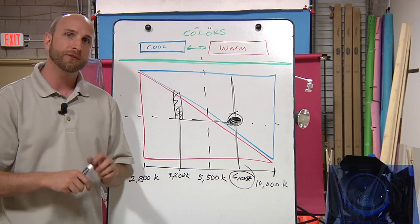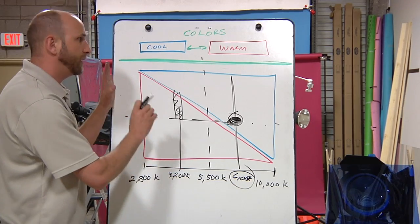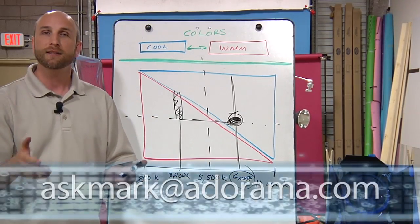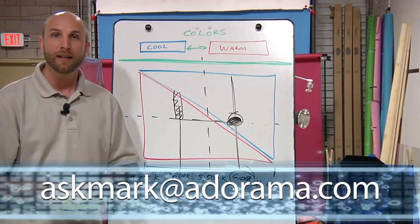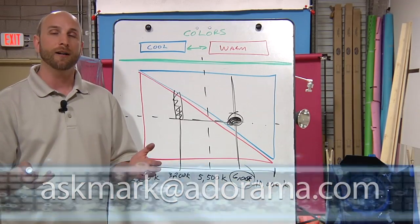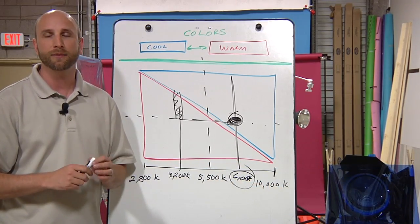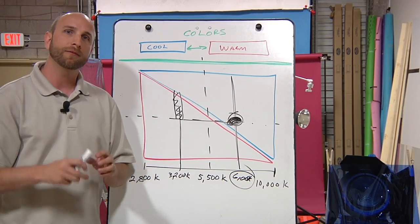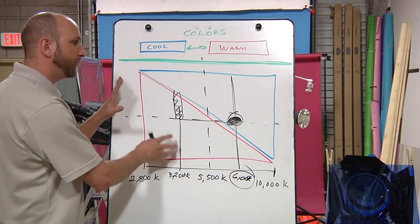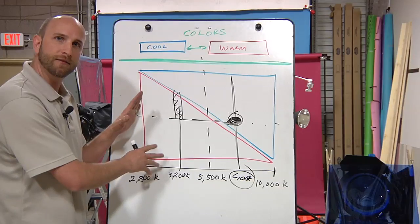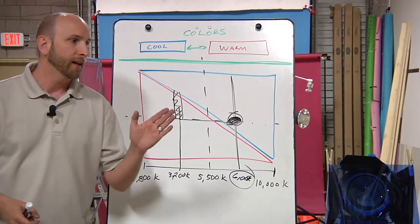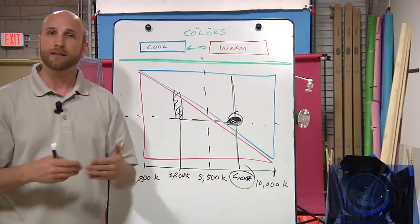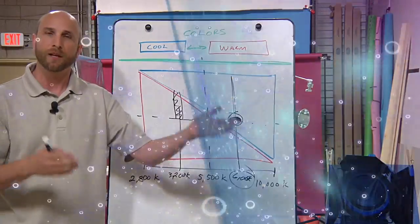I know it might be confusing, but if this isn't clear and you want a better explanation, please send me a note at askmark@adorama.com and say hey, please give us a better explanation of color theory and we might make a few episodes on that. But this is your really fast behind-the-scenes video to try to explain why adding a blue gel to a tungsten light actually warms it up, not cools it off.